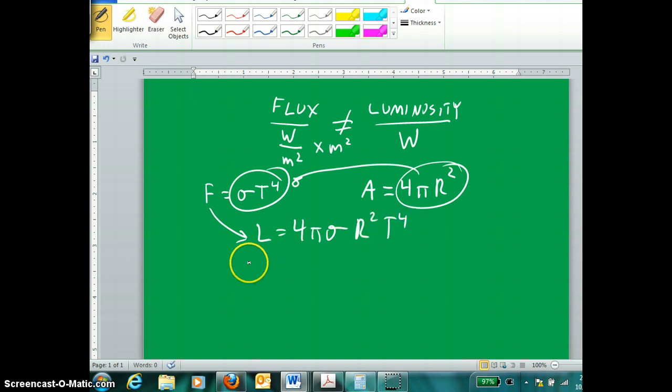So, if you knew the luminosity or the radius or the temperature, any two of these three, you could, of course, find the third because these are essentially constants.